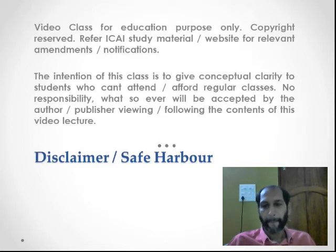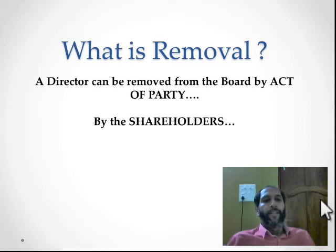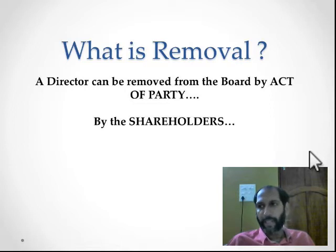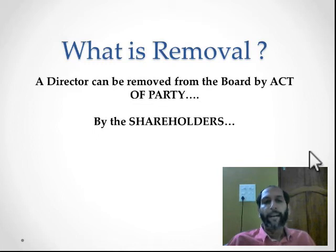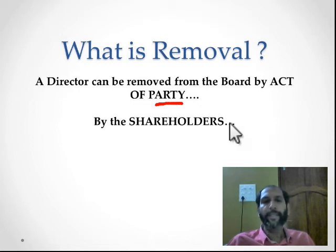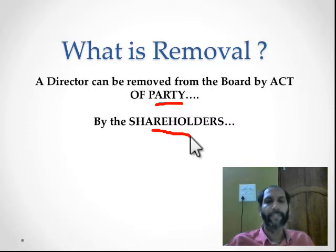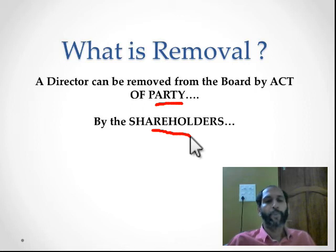What is removal? A director can be removed from the board. Section 2 Clause 34 defines a director as a member of the board. A director can be removed by act of party — not by his own act. That party is the shareholders. Shareholders basically appoint directors to manage the affairs of the company, so the right of removal is also given to the shareholders. Shareholders are the ultimate authority to remove directors from the board. Removal means removing a director from the capacity of a director of the board.